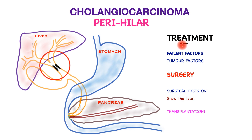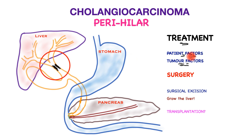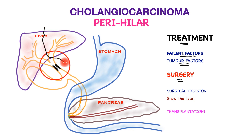Definitive treatment of perihilar cholangiocarcinoma depends on tumor factors and patient factors. Tumor factors predicting surgical resectability include localized disease allowing safe removal, with the tumor either not involving surrounding blood vessels or involving them in a way that still permits surgery with vascular reconstruction. Patient fitness is equally important, as surgery for perihilar cholangiocarcinoma is highly complex and requires a good level of fitness. The surgery typically involves removal of half or a lobe of the liver along with the bile duct down to its junction with the pancreas.